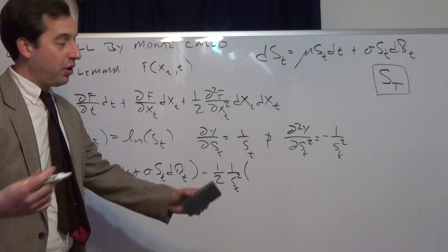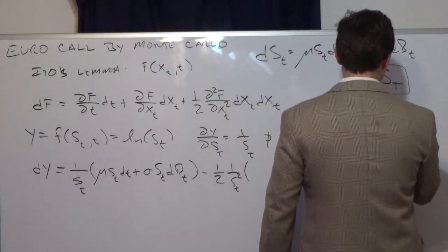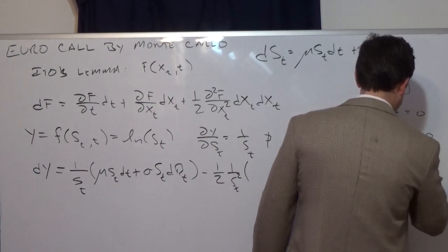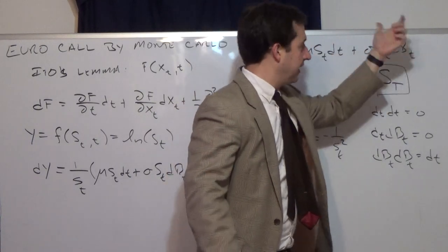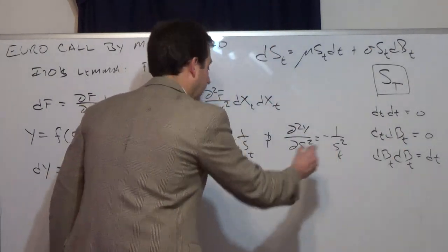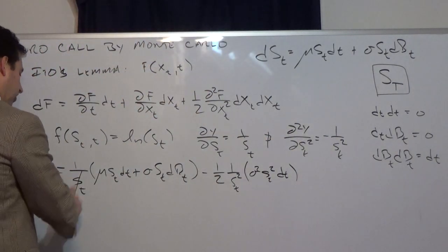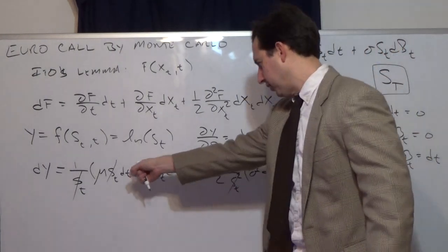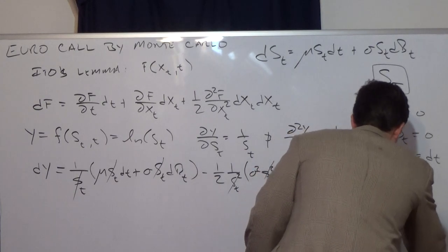To simplify the dS_t·dS_t term, we use the multiplication rules: dt·dt equals zero, dt·dB_t equals zero, and dB_t·dB_t equals dt. So in the product, the dt·dt term is zero, the dt·dB_t and dB_t·dt terms are zero, and we're left only with the last term: sigma²·S_t²·dt. Canceling the S_t terms and rearranging, putting the dt terms together, this gives us dy equal to (mu minus one-half sigma squared) dt plus sigma dB_t.